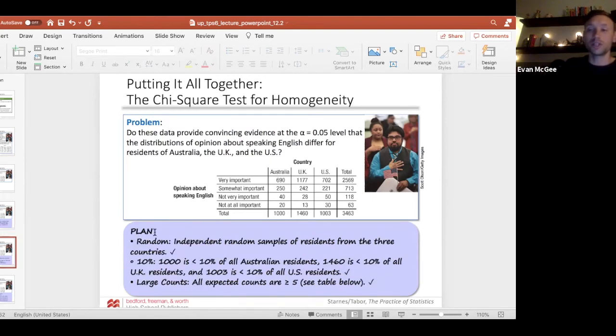In the plan section, this is where we'll check the conditions. The random condition is met because the three samples taken were independent random samples from the three different countries. The 10% condition: 1440 is less than 10% of all Australians, the 1460 is less than 10% of all UK, and the 1003 is less than 10% of all US residents. The large counts condition: we have to calculate the expected counts and make sure they're all greater than or equal to five.